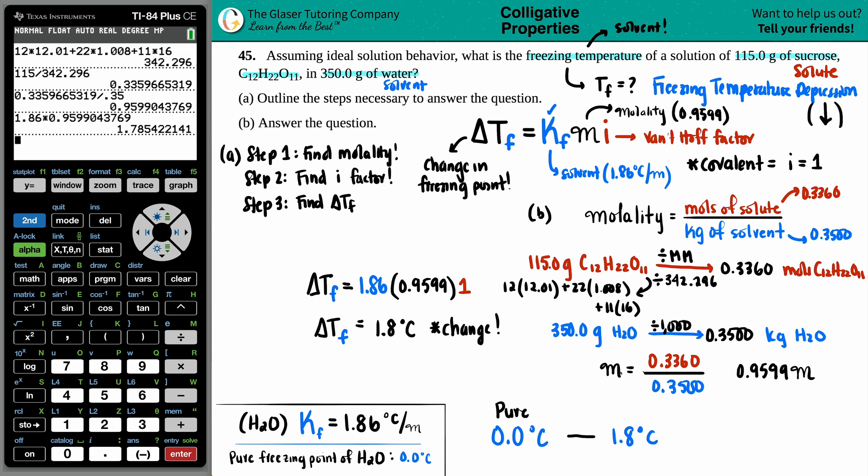So this is a big difference, whether you're dealing with freezing temperatures or boiling. If it was boiling, you would add because boiling temperatures can only elevate or go higher. But in this case, we got our freezing temperature of being a negative 1.8 degrees Celsius. And that is the final question.